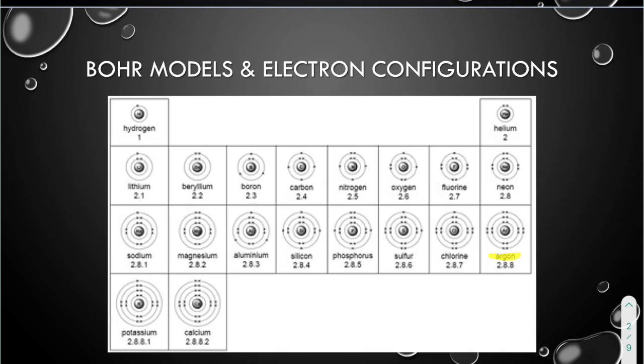Argon here has two electrons and then eight electrons, that's full, and then eight electrons, that's full as well. So 2-8-8 for the configuration. So that is Bohr model and electron configuration. Your Bohr model should look like this. If they don't look like this, double count everything. Make sure that you have done that correctly.